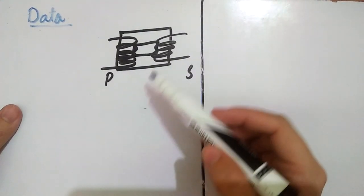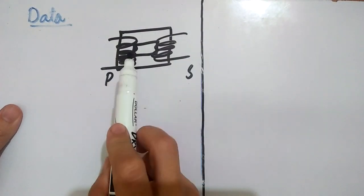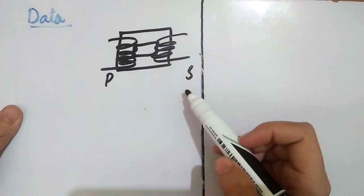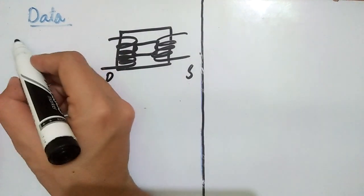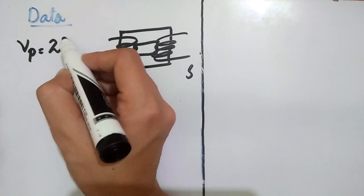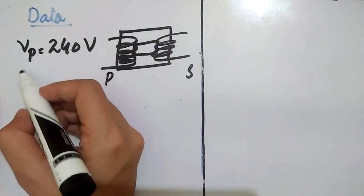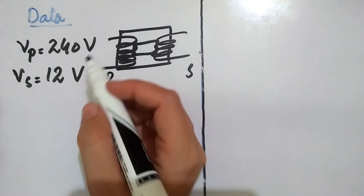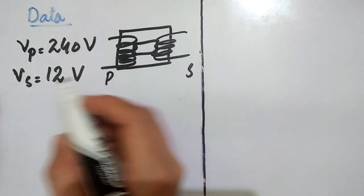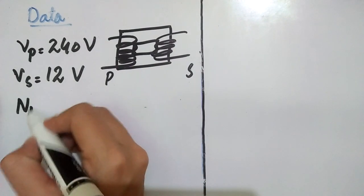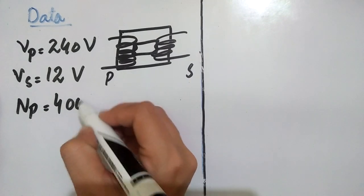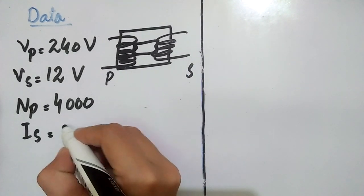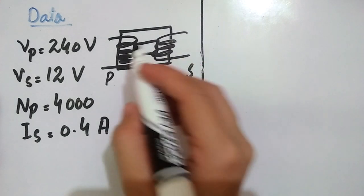This is a step-down transformer. In a step-down transformer, the primary number of turns is greater than the secondary number of turns, and primary voltage is greater than secondary voltage. We write the data: primary voltage Vp = 240 volt, secondary voltage Vs = 12 volt. Number of turns in primary coil Np = 4000. Current in secondary coil Is = 0.4 ampere.